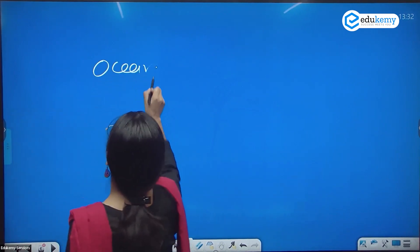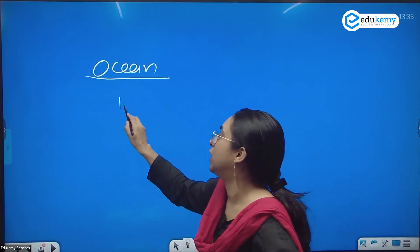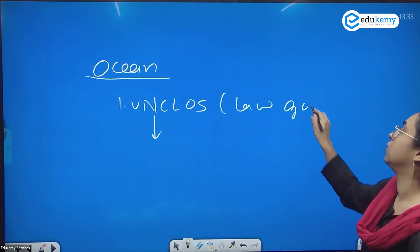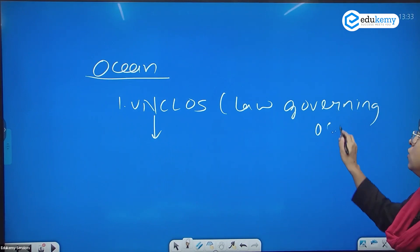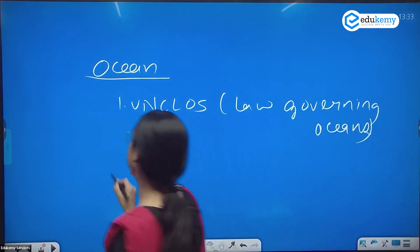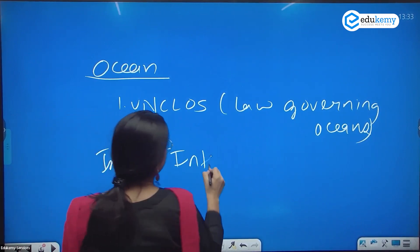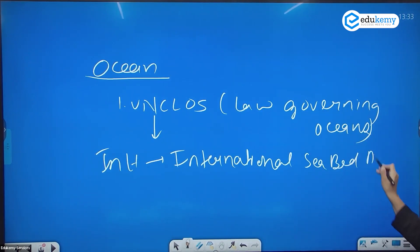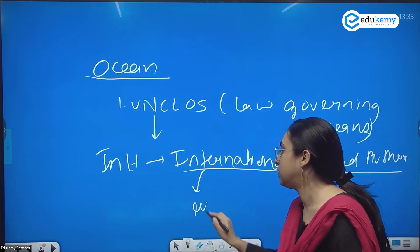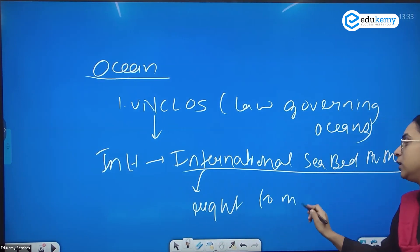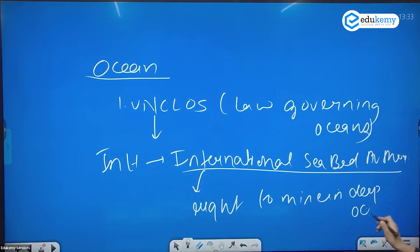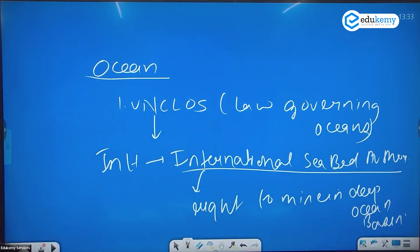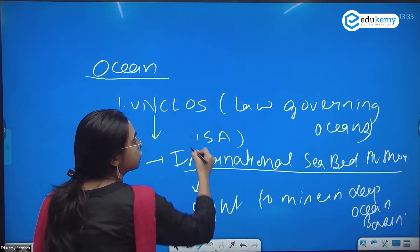Is there a law that governs the ocean? Yes — it is called UNCLOS. Under UNCLOS there is an international body called the International Seabed Authority, which gives the right to mine in the deep ocean basin, also known as the abyssal plain. India has received mining rights under this authority.